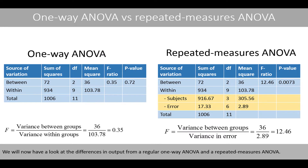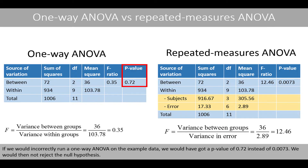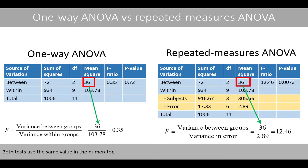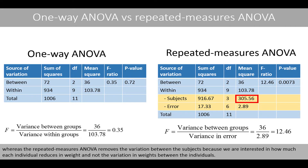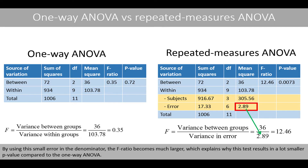We'll now have a look at the differences in output from a regular one-way ANOVA and the repeated measures ANOVA. If we would incorrectly run a one-way ANOVA on the example data, we'd have got the p-value of 0.72 instead of 0.0073, and we would then not reject the null hypothesis. Both tests use the same value in the numerator. However, the one-way ANOVA uses the total within variance in the denominator because it assumes the groups contain observations of independent individuals, whereas the repeated measures ANOVA removes the variation between the subjects because we're interested in how much each individual reduces in weight. By using this small error in the denominator, the F-ratio becomes much larger, which explains why this test results in a much smaller p-value compared to the one-way ANOVA.